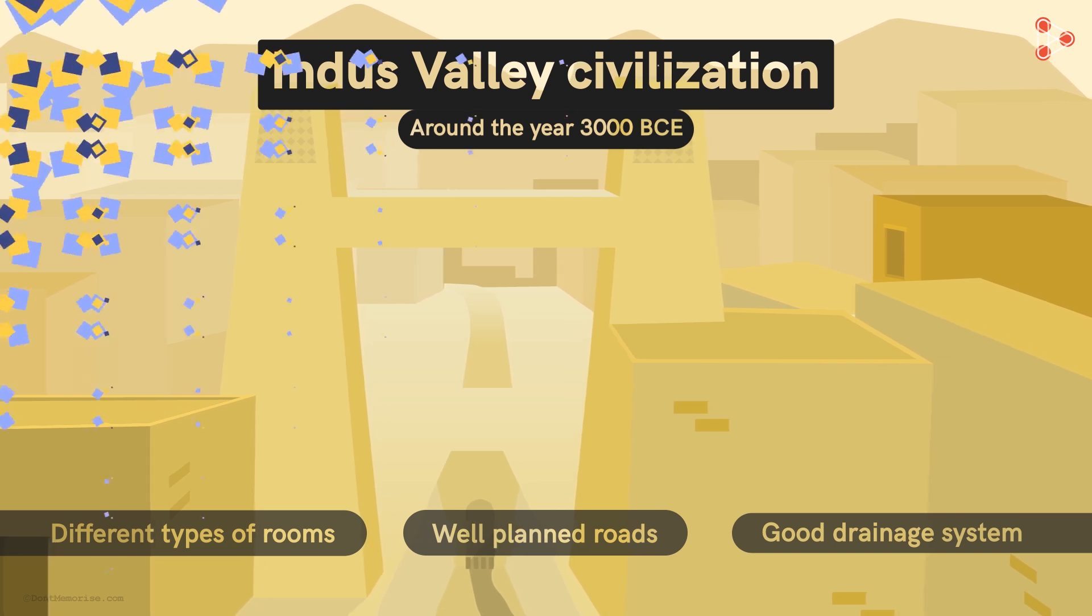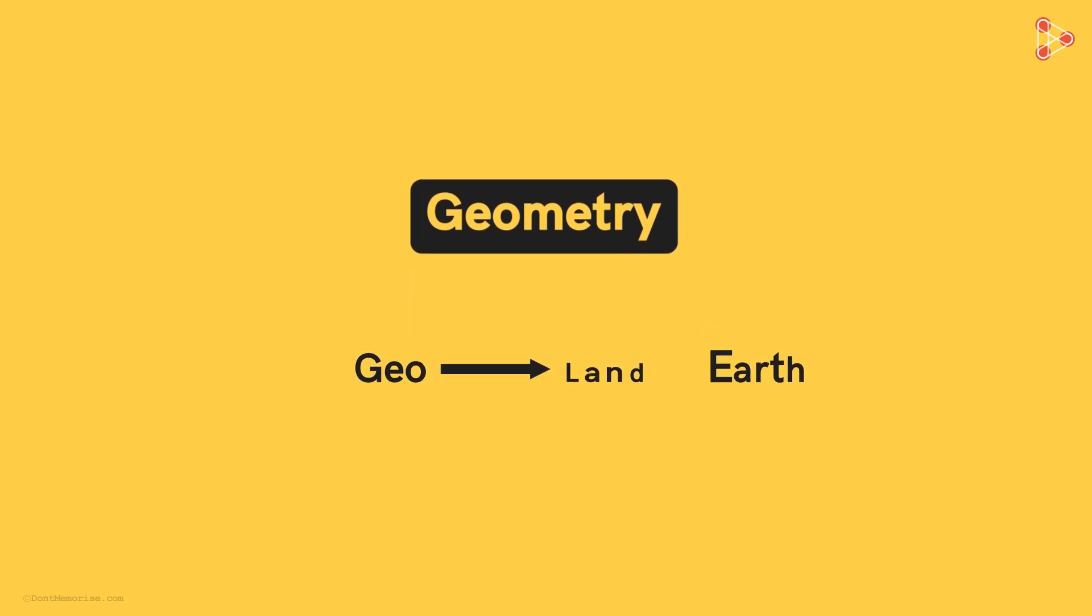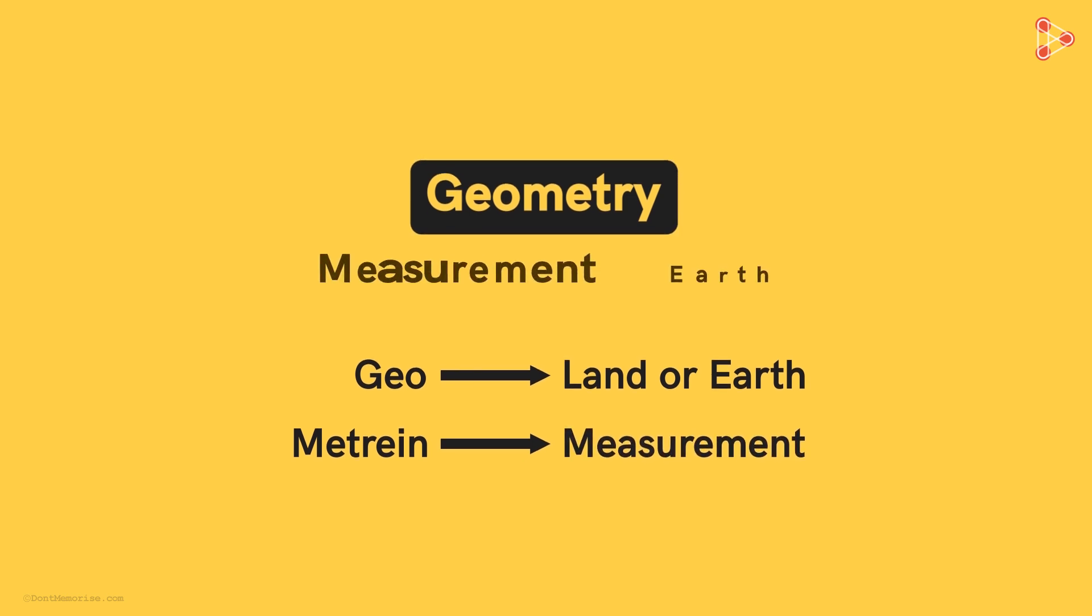Basically, geometry was being used in many parts of the world throughout the period. The word geometry itself comes from the combination of Greek words, geo meaning land or earth and metrine meaning measurement. So geometry means the measurement of earth.